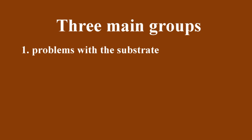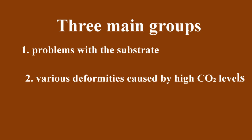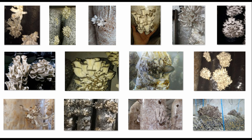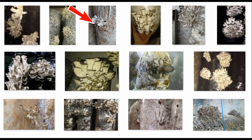The second and much more common group is various deformities caused by high CO2 levels. Just look at these photos — elongated, twisted stems, tiny caps, or caps rolled inward. All these weird shapes are caused by CO2. The final shape depends on when exactly the mushrooms were exposed to CO2, how high the concentration was, and how long the exposure lasted.